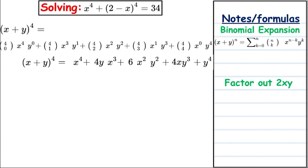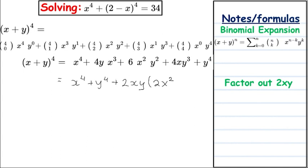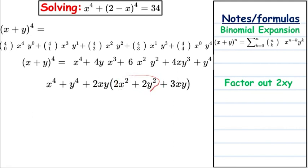Now we're going to factor out 2xy from three of the middle terms, keeping x⁴ plus y⁴ separate. The factor 2xy is the highest common factor among the 4x³y, 6x²y², and 4xy³ terms. Factoring out gives us 2x² from 4x³y, 3xy from 6x²y², and 2y² from 4xy³, leaving x² plus y² inside the parenthesis to be simplified.